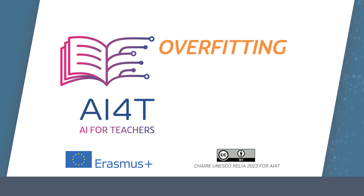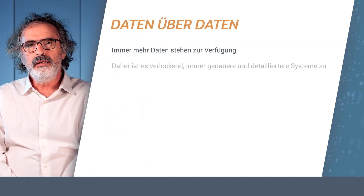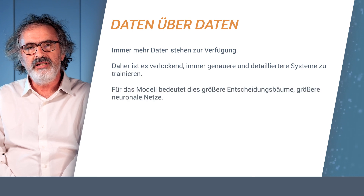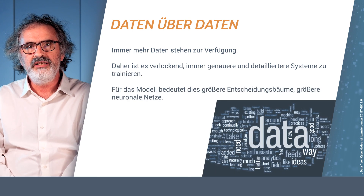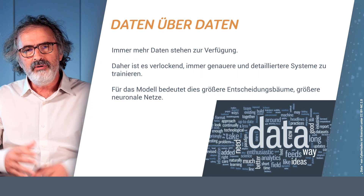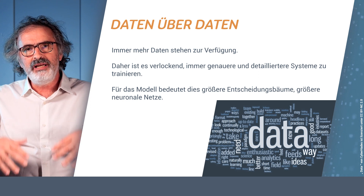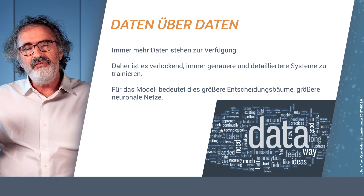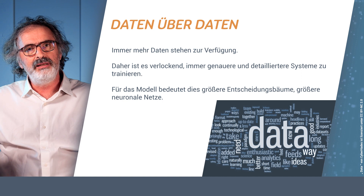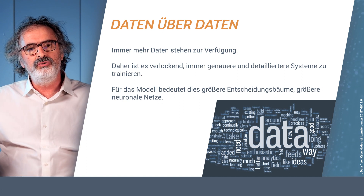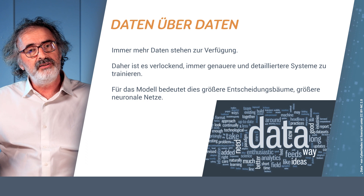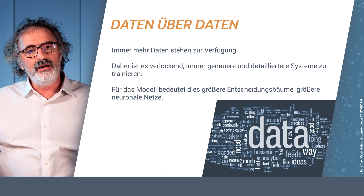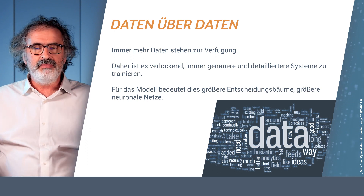There are many strange phenomena in machine learning. One of them is called overfitting. The key idea with overfitting is that as more and more data becomes available, we feel that the more data we have, the more complex the rules we will build — and therefore we are encouraged to build more and more complex rules, hoping that the more complex the rules, the better they work. This isn't quite true.